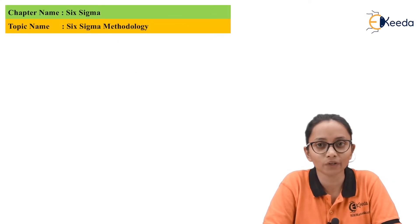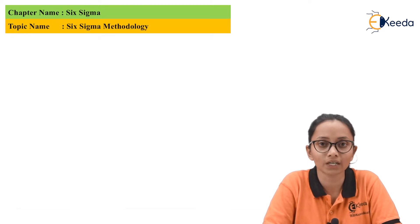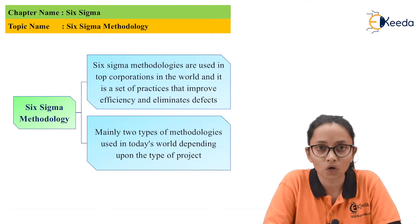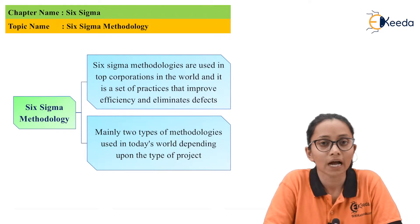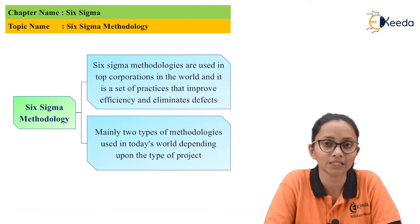In the previous video we have studied about Six Sigma, its history, benefits and uses. In this video we are going to study about the methodology which we are going to use to implement Six Sigma. The Six Sigma methodologies are used in top corporations in the world and it is a set of practices that improve efficiency and eliminates defects.